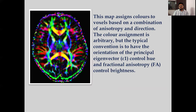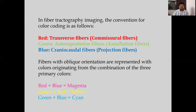This map assigns color to voxels based on a combination of anisotropy and direction. The color assignment is arbitrary, but the typical convention used is that the vector controls the hue and fractional anisotropy controls brightness. In fiber tractography imaging, the conventional color coding is as follows.